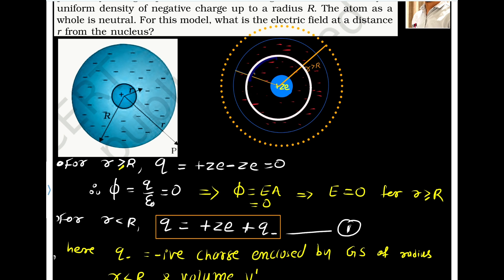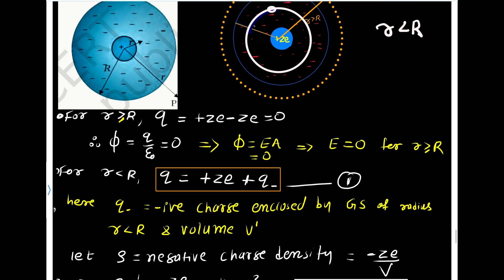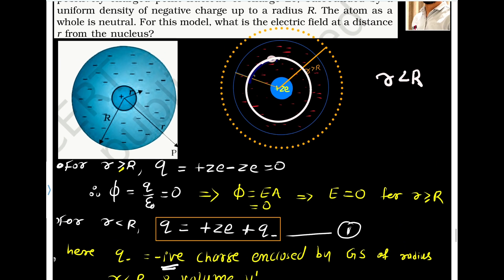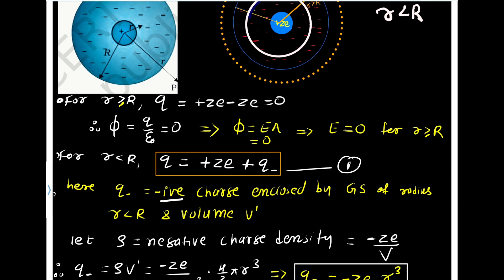Let us assume I am considering this circle — a point at a distance r less than R. In that case, the total charge enclosed is plus Ze plus Q minus, where Q minus is the negative charge enclosed by this Gaussian surface. When I draw this sphere, some of the negative charge is outside this Gaussian surface and some is inside. So Q minus is the negative charge enclosed in the Gaussian surface of radius r less than R.